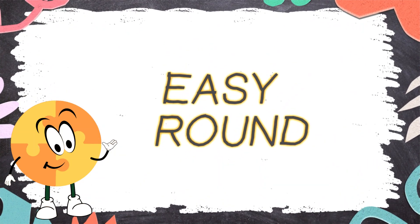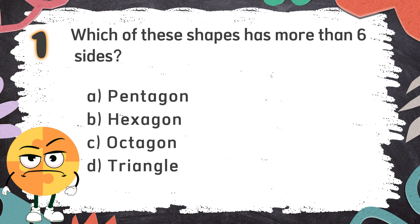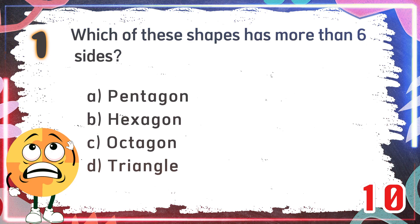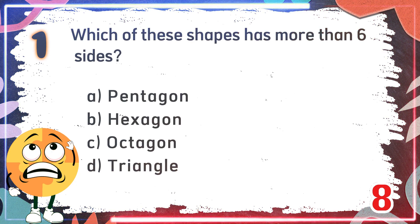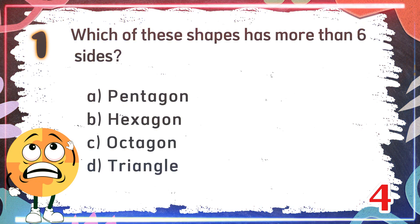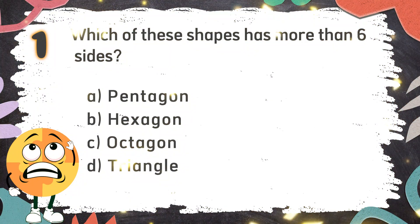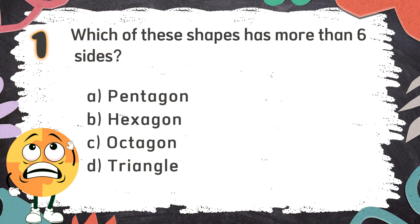Easy Round. Number 1: Which of these shapes has more than 6 sides? The choices are A. Pentagon, B. Hexagon, C. Octagon, D. Triangle.